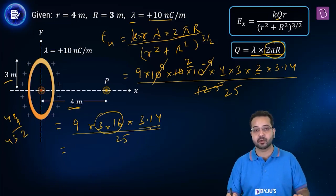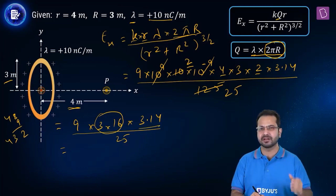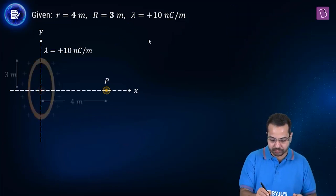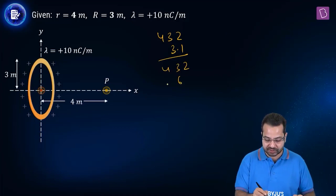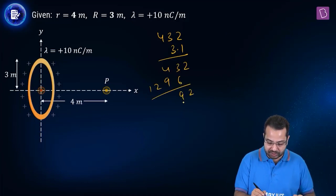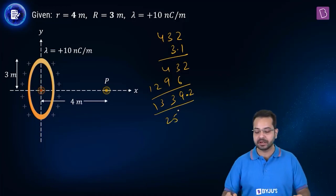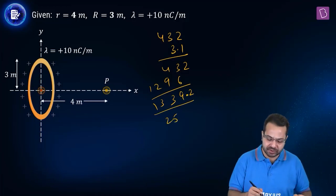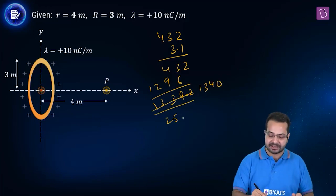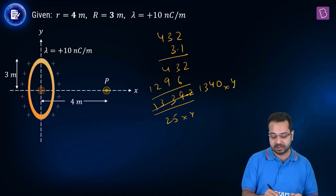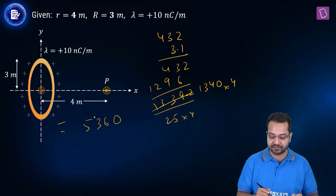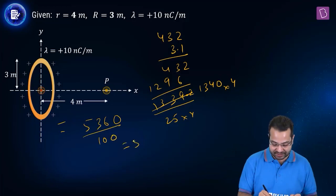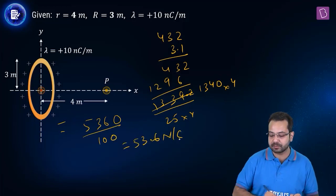To ease calculation I'm multiplying by 3.1 instead of 3.14. 432 × 3.1 gives approximately 1339.2. I approximate this as 1340, then multiplying and dividing by 4 makes the denominator 100: 1340 × 4 = 5360, giving 5360/100 = 53.6. After calculation we are left with approximately 53.6 Newton per Coulomb.